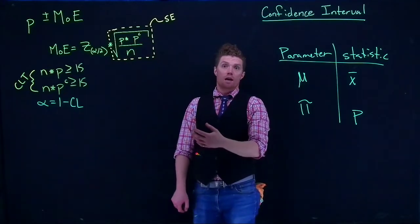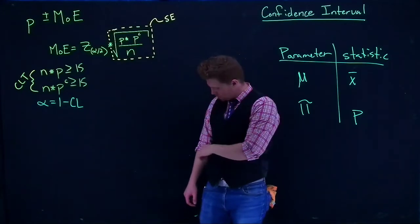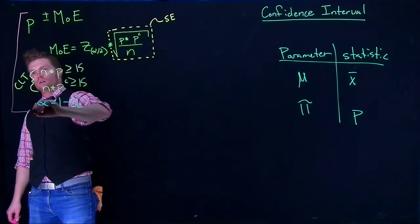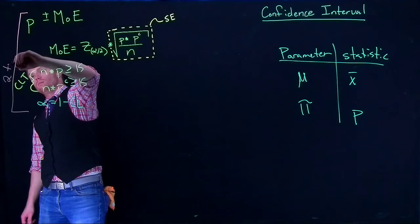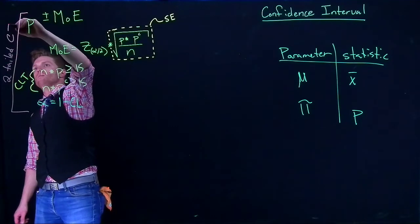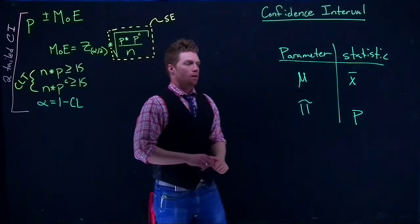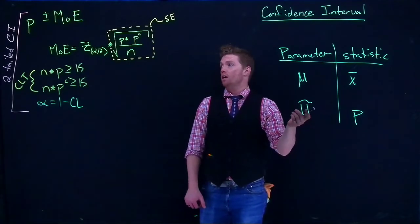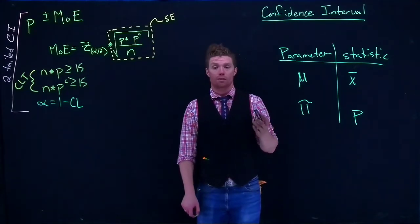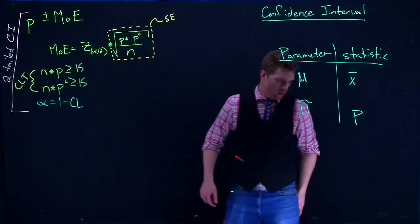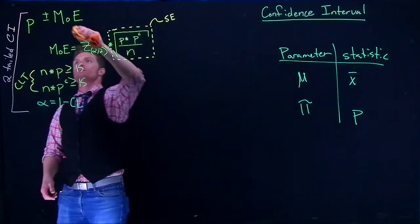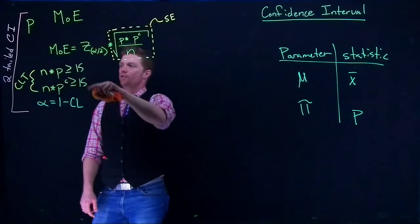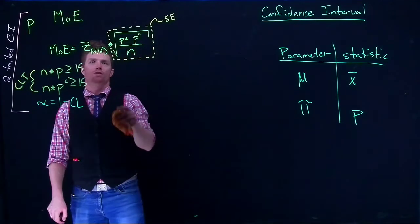And so that's how we do a two-tailed confidence interval. Now if we want to go and do a one-tailed confidence interval for proportions, the change is actually quite simple. Here's all that we have to do. Let's go ahead and erase a few things. These still hold, central limit theorem still holds, how we calculate alpha still holds.